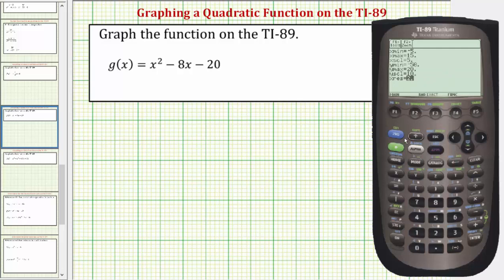Now to graph the function, let's press diamond F3 for graph. Notice now we have a very nice view of the quadratic function, which gives us this parabola. You can see here's the vertex, as well as the horizontal intercepts.